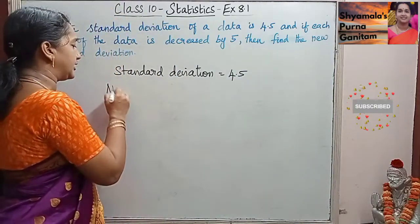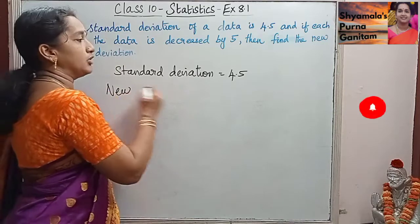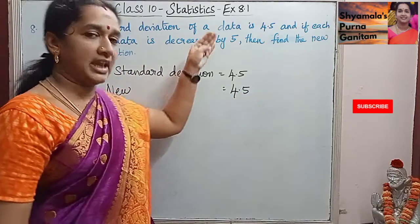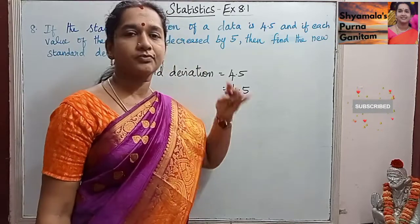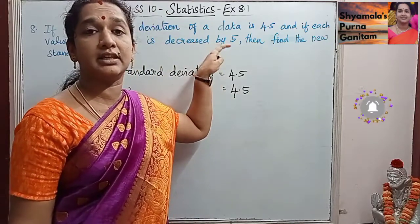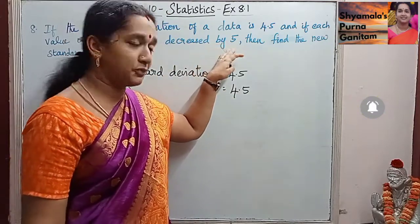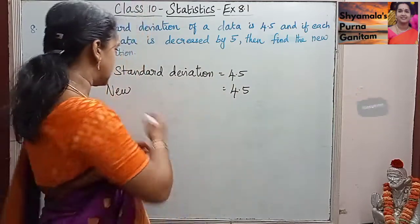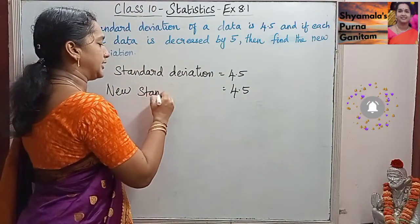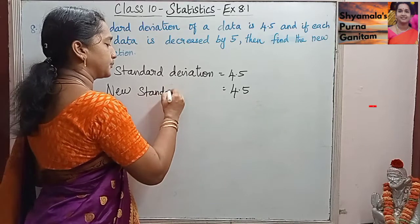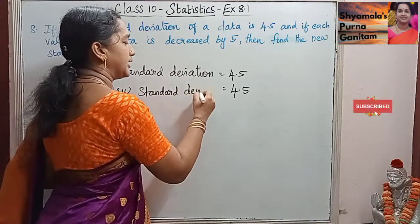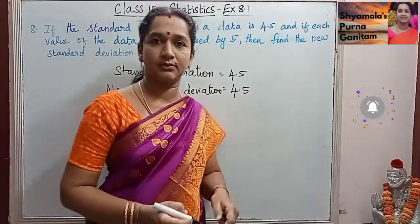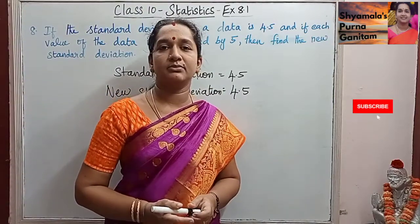The new standard deviation will also be equal to 4.5. Since everything is decreased by 5, there won't be any change in the standard deviation. So the new standard deviation is also equal to 4.5. Thank you.